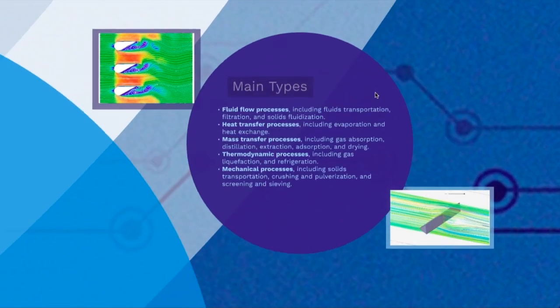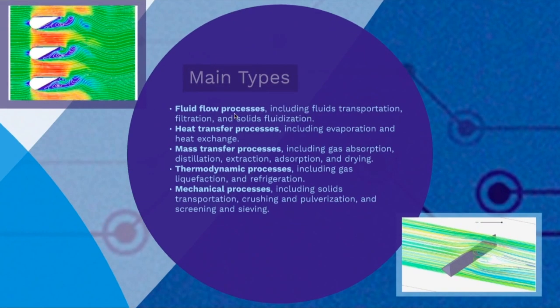So let's check out the different types. We have at least four or five different types of unit operations. The first one will be fluid flow, as the name implies, fluids will be flowing through these operations. These are essentially filtrations, solid fluidization or fluid transportation. For example, moving water if you're in your house and you want to take a shower.